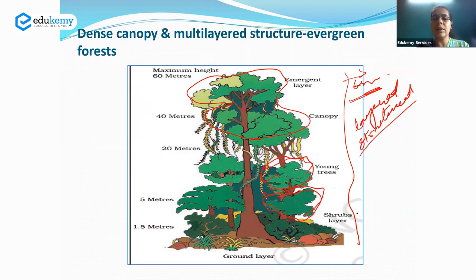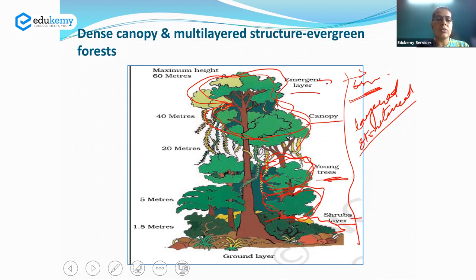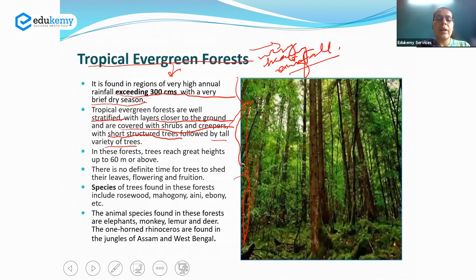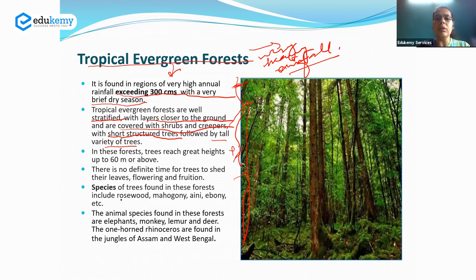The shorter plants are called the shrub layer, the relatively bigger ones are called young trees, while the trees at the highest level are called the canopy and the emergent layer. These trees can grow to great heights and do not shed their leaves. Some important tree species found in this forest include rosewood, mahogany, ebony, etc. Important wildlife species present include elephant, monkeys, lemurs, and the one-horned rhinoceros, which is found in the jungles of Assam and West Bengal.